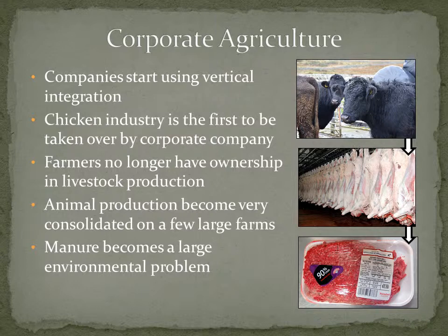They own the livestock, they do the processing, and they sell it directly to the consumer. The chicken industry was the first to go, followed by the swine industry, and now even the cattle industry is becoming a corporate-owned entity. The farmers don't own the livestock — the corporations do — and animal production consolidates on a few large farms. That creates the manure problem we have, which is a very important environmental problem that needs to be addressed, as we've concentrated this manure on a few farms.